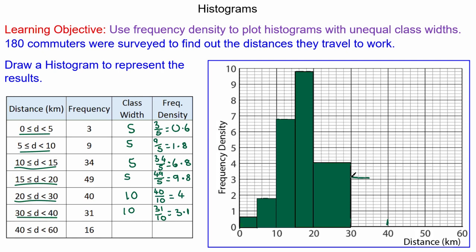The last one from 40 to 60, the class width is 20 now and the frequency density is 16 divided by 20 which is 0.8. We're showing this on our graph from 40 to 60 and up to 0.8 and we draw our bar.